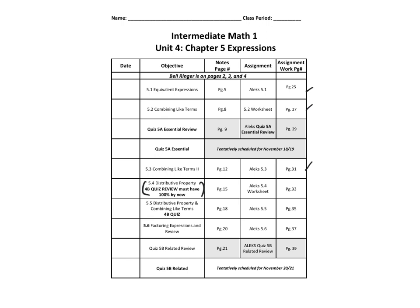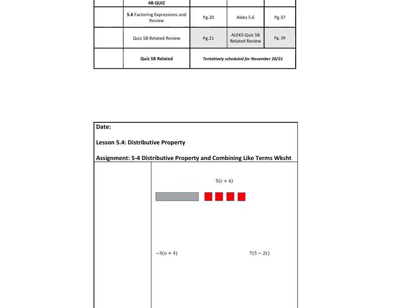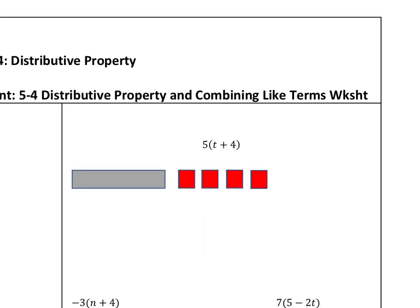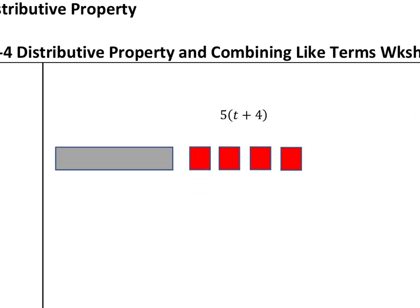Now let's talk about distributive property. By now in class I've talked to you about mama kissing the babies. We've drawn pictures of it in the last lesson — you've seen this. Go ahead and draw the picture, figure out what it is, simplify this expression using distributive property, whether you draw the picture or use mama kissing the babies. Then check to see if they're equivalent. Go ahead and do this problem.